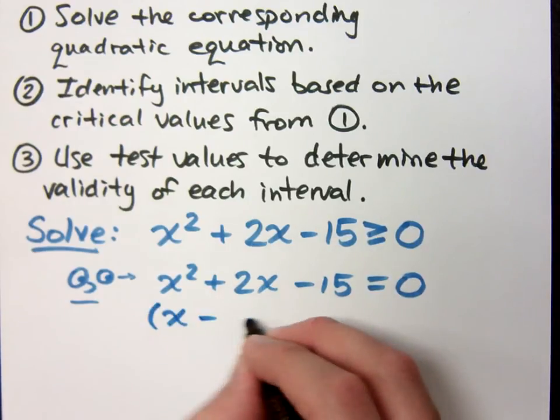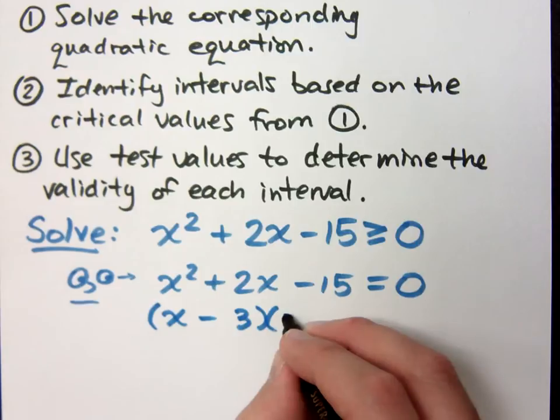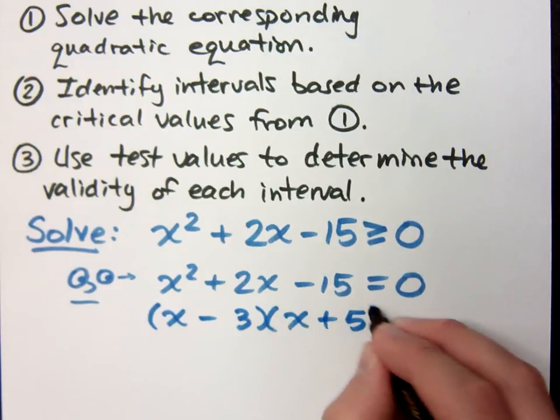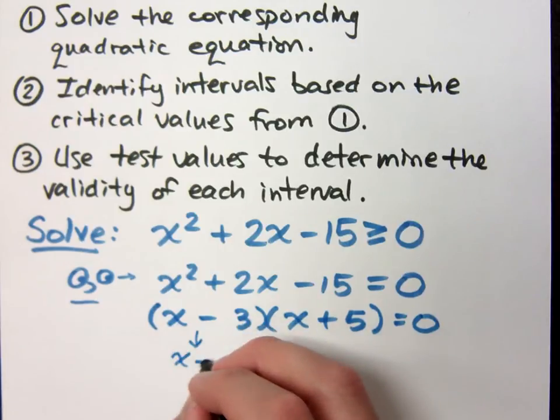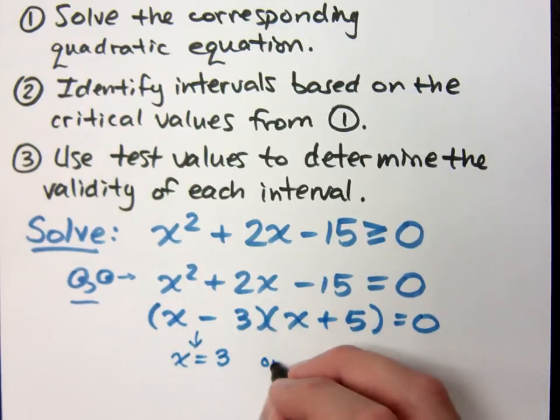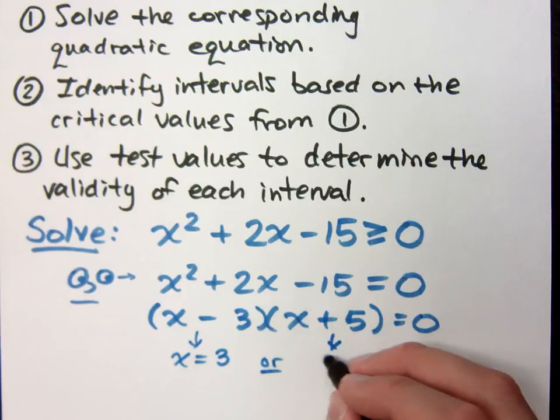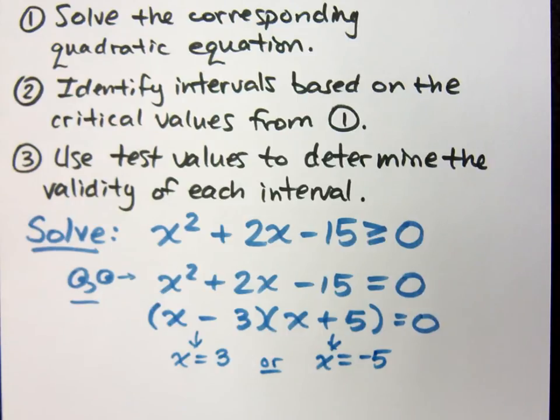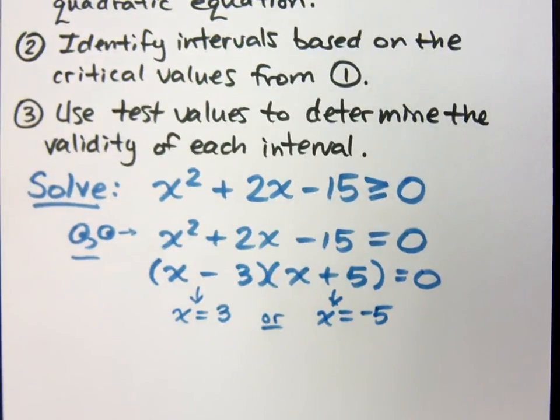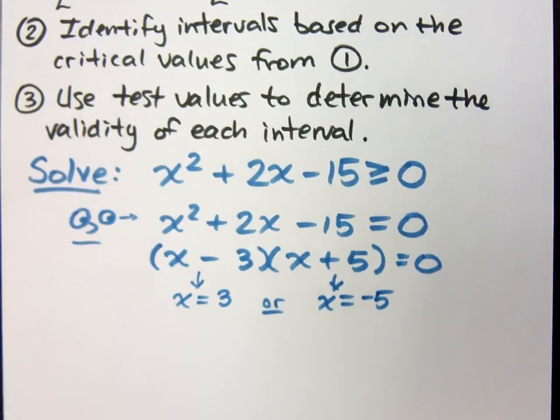So watch this. This will factor as x minus 3 times x plus 5. And when I solve this, I find that x equals 3 or x equals negative 5. So we have our critical values. That's step one.